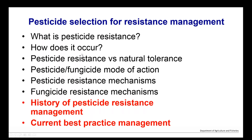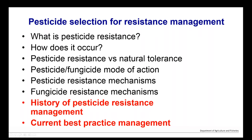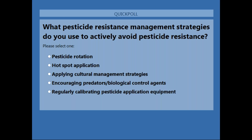This last section covers the history of pesticide resistance management and current best practice. First, a poll: what sorts of actions do you do to actively avoid pesticide resistance? Pesticide rotation is the biggest one, with a little bit of some of the others. The first accounts of pesticide resistance were published just before 1900, with a few more around 1910. It didn't really become massively prevalent until the mid-1950s, then there was a boom — people in broad-acre cropping were just spraying constantly, causing huge selection pressure.